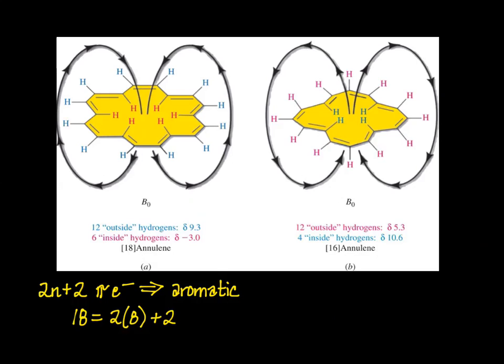As shown, both the shielding of the inside protons and the deshielding of the outside protons results from the same aromatic ring current. This induced field opposes the applied field in the center of the molecule and reinforces the applied field on the outside of the molecule, giving rise to the observed chemical shifts.